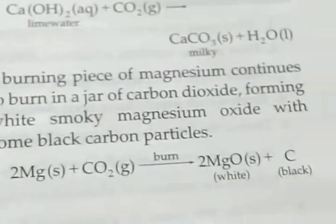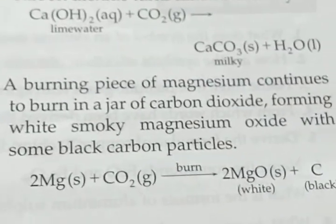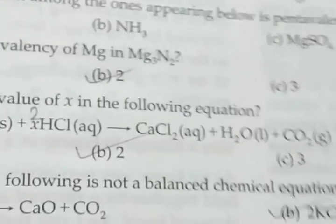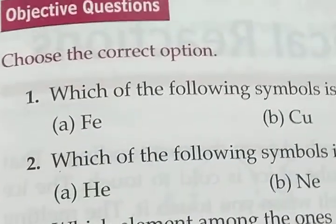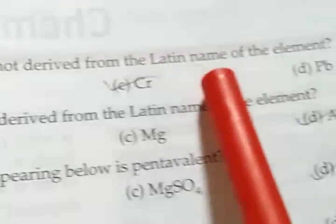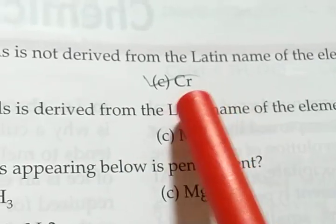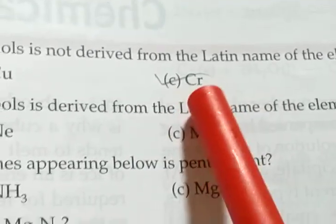Students, I hope all of you understood what I have discussed in the whole chapter. Now I will discuss the short type questions for the exam only. So look at the exercise. Choose the correct option. Which of the following symbols is not derived from the Latin name of the element? So here are four options: ferrum, cuprum, and plumbum. The answer will be chromium.